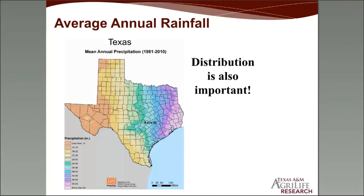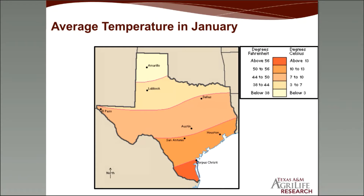This map shows the average annual rainfall in Texas. In some parts of East Texas it can be more than 54 inches in a year, and moving west there are areas receiving less than 14 inches. Not only is the total amount of precipitation important, but the distribution is also important. If you're growing a warm season forage productive May through November but all your rain comes in winter, it won't be effective precipitation for that crop, so you might need something more drought hardy.